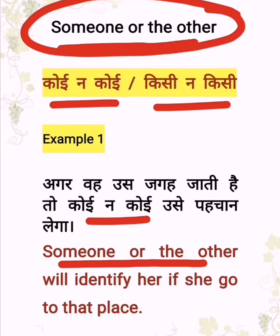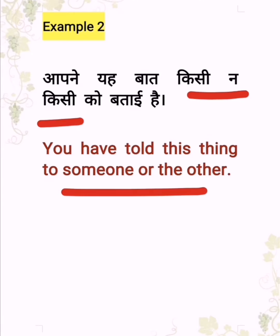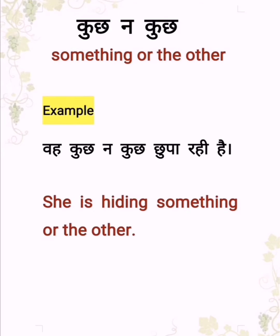If she goes to that place, someone or the other will identify her. So if you've told this thing to someone, in English we say: 'You have told this thing to someone or the other.'